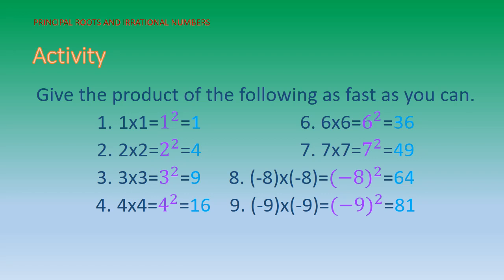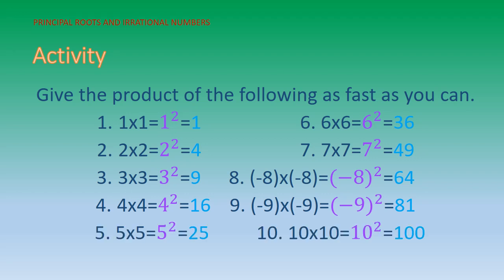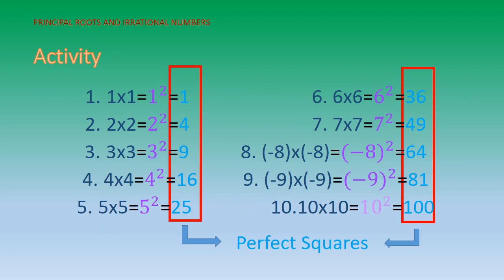Number four: 4×4 is the same as 4² = 16, and (−9)×(−9) is the same as (−9)² = 81. Number five: 5×5 is the same as 5² = 25, and 10×10 is the same as 10² = 100. These products are all perfect squares because their factors are the same.